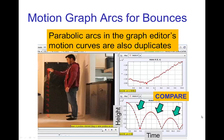Similarly, the motion graph of the arcs on bounces are duplicates. So, here, this is actually some data from looking at the position of a bouncing ball frame to frame, and when we look at the height graphed against